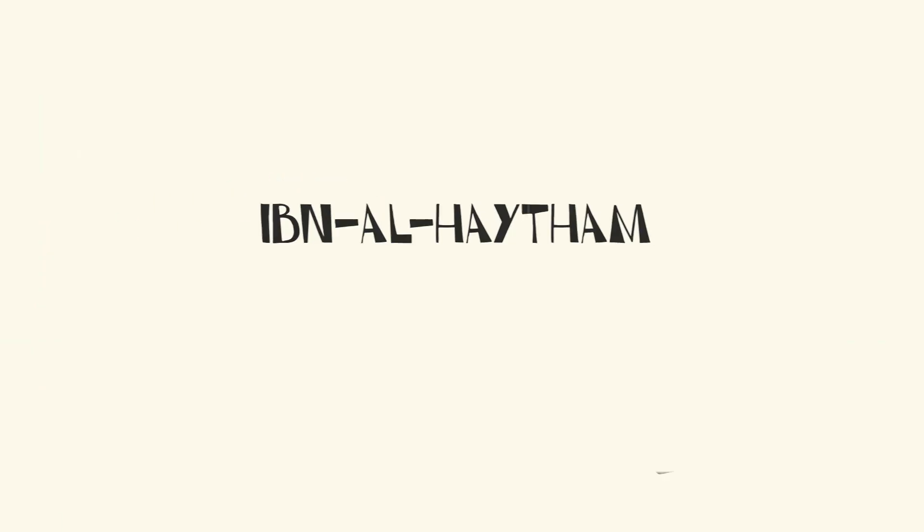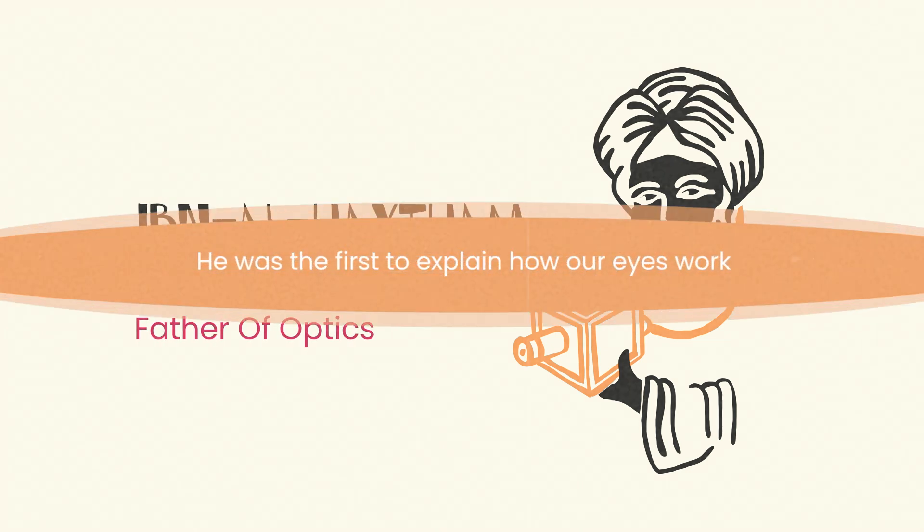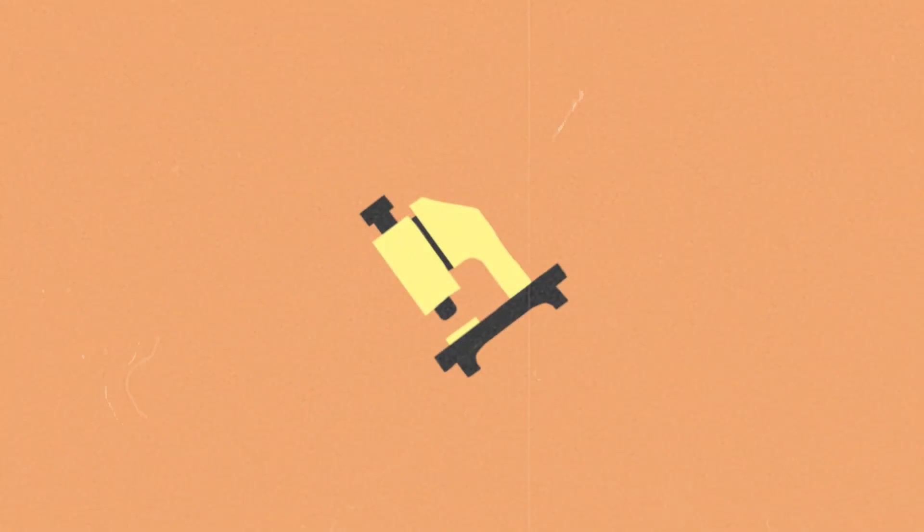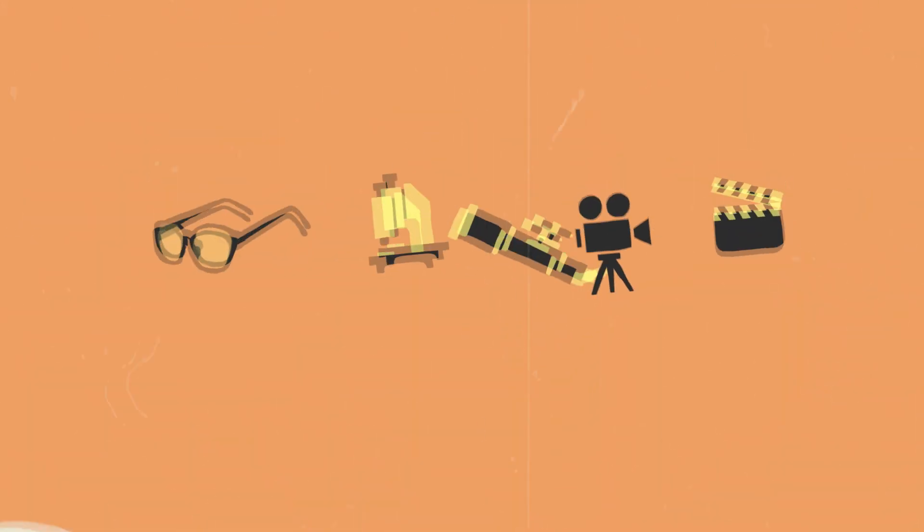Ibn al-Haytham is known as the father of optics. He was the first to explain how our eyes work, a foundational theory that led to inventions such as glasses, microscopes, telescopes, the camera and even cinemas.